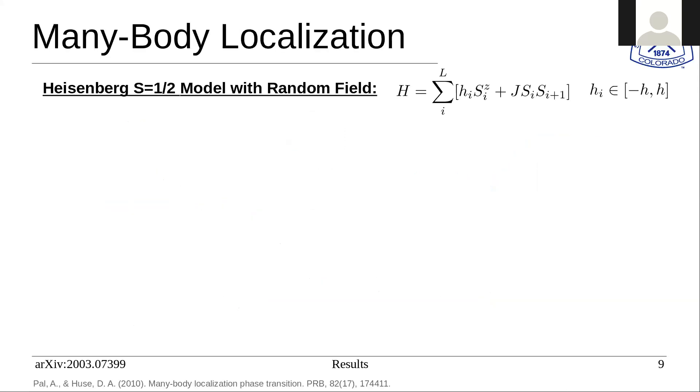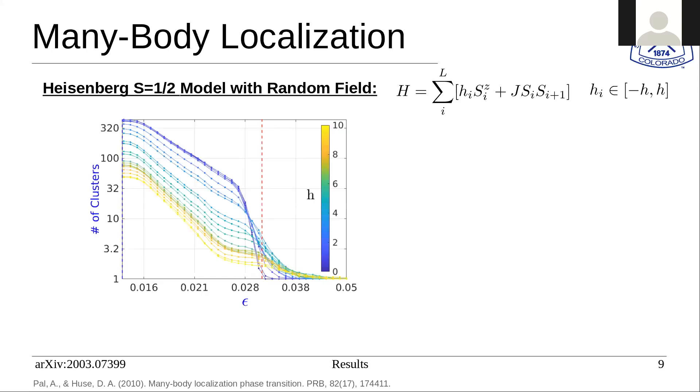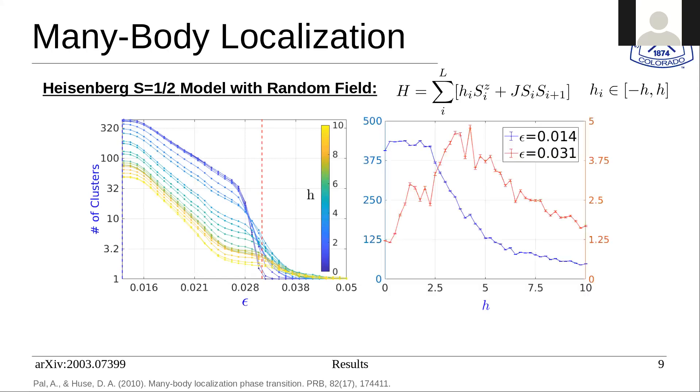We also explore the diffusion map on many body localization phase transitions. Here is a paradigmatic model first introduced by Huse. Again, we explore the number of clusters in respect to epsilon dependence. Here you can see a very different behavior for the very dark blue compared to all of the other values of h. H here is a random field that is added in the z direction to the Heisenberg model. We've done this with another model and found similar features. Taking the blue and the red slices and looking at them in more detail, for the blue slice, this represents your number of unique samples.